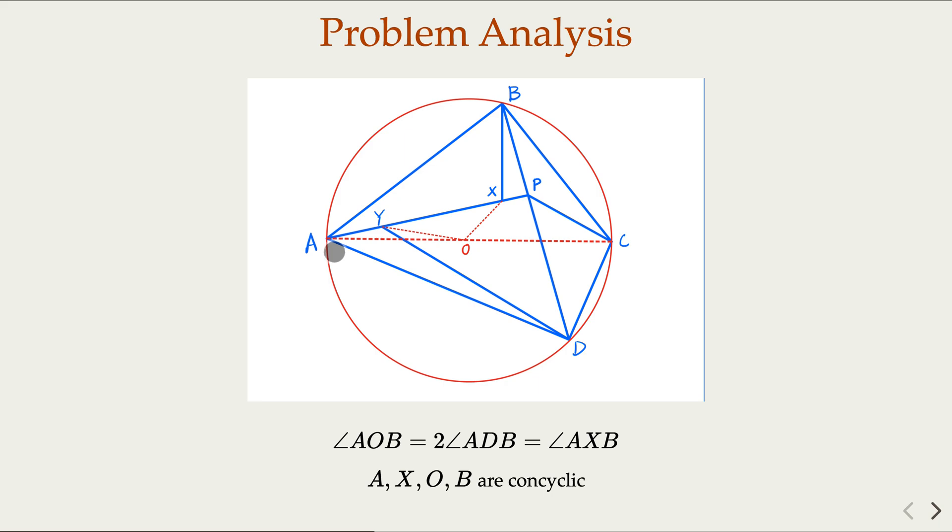Similarly for the other side, AYOD. In this case, angle AOD is equal to angle ABD. But earlier we said that ABD is half of angle AYD. So because AOD and AYD, the angles are equal, AYOD are on a circle.